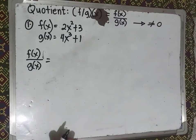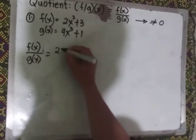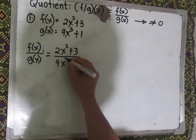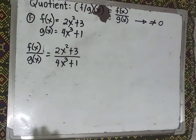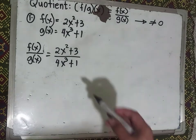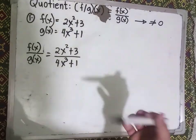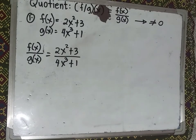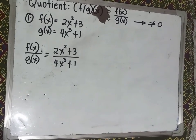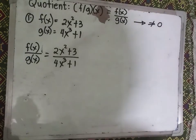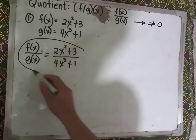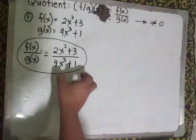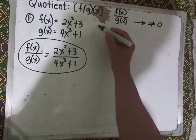So the value of f(x) is 2x² + 3 over g(x) which is 4x³ + 1. Let's check the numerator and denominator — is 2x² + 3 factorable? No. How about 4x³ + 1? No. If we cannot factor the numerator and denominator, the given function is automatically your final answer.